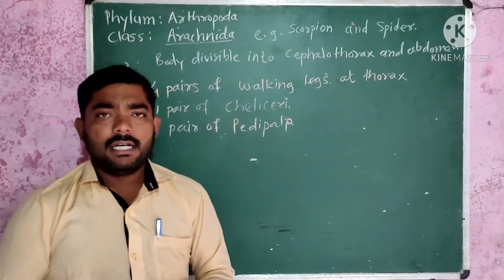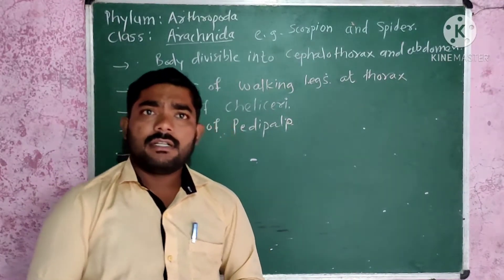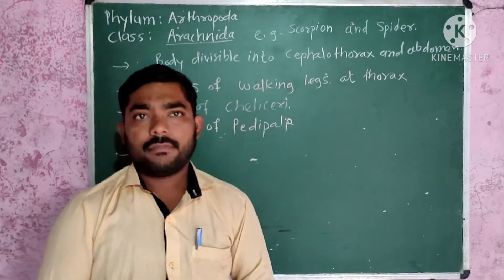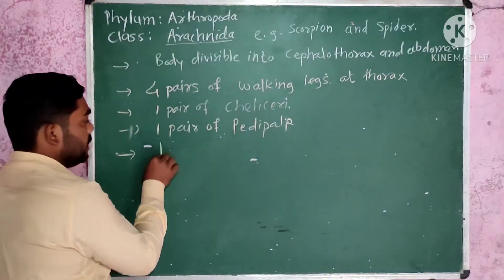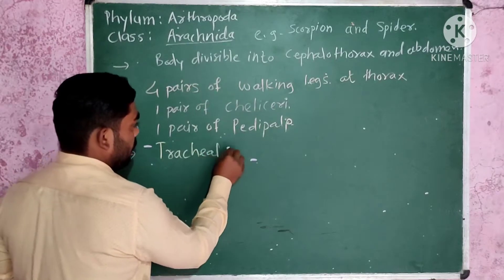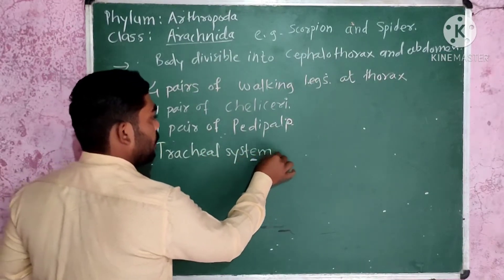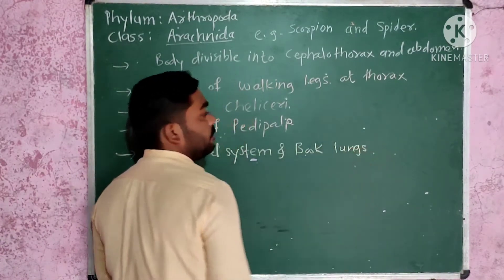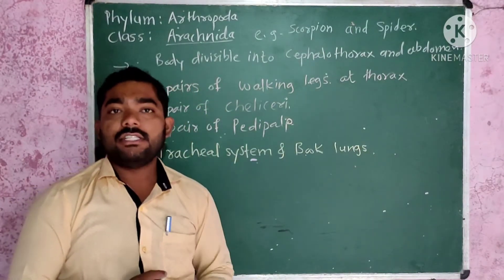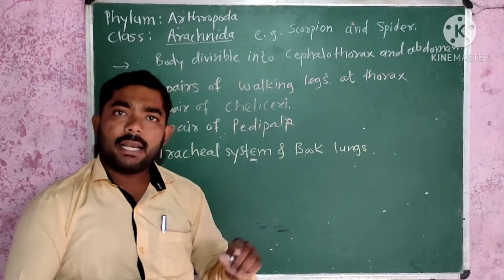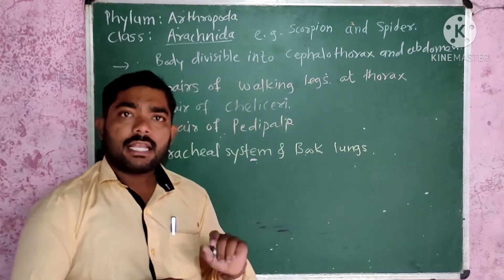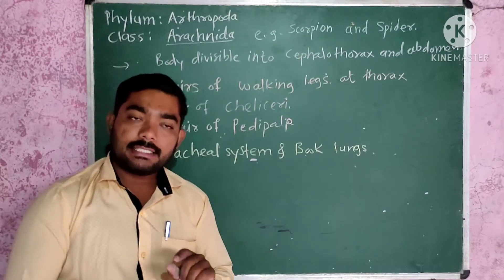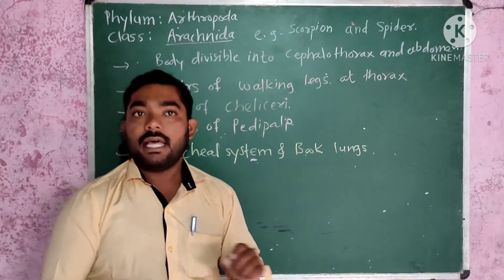Other systems like digestive system and respiratory systems are well developed. The respiration is by tracheal system and book lungs. Excretion is carried out by Malpighian tubules, as well as coxal glands. The coxal glands are helpful to excrete out their waste products.